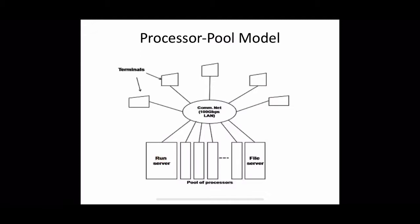There is a special server called the run server which manages and allocates processors in the pool to different users on a demand basis. When a user submits a job, an appropriate number of processors are temporarily assigned by the run server. For example, if a user's job is compilation of a program with n segments that can each be compiled independently, n different processors from the pool can be allocated to compile all segments in parallel. When computation is completed, the processors are returned to the pool.